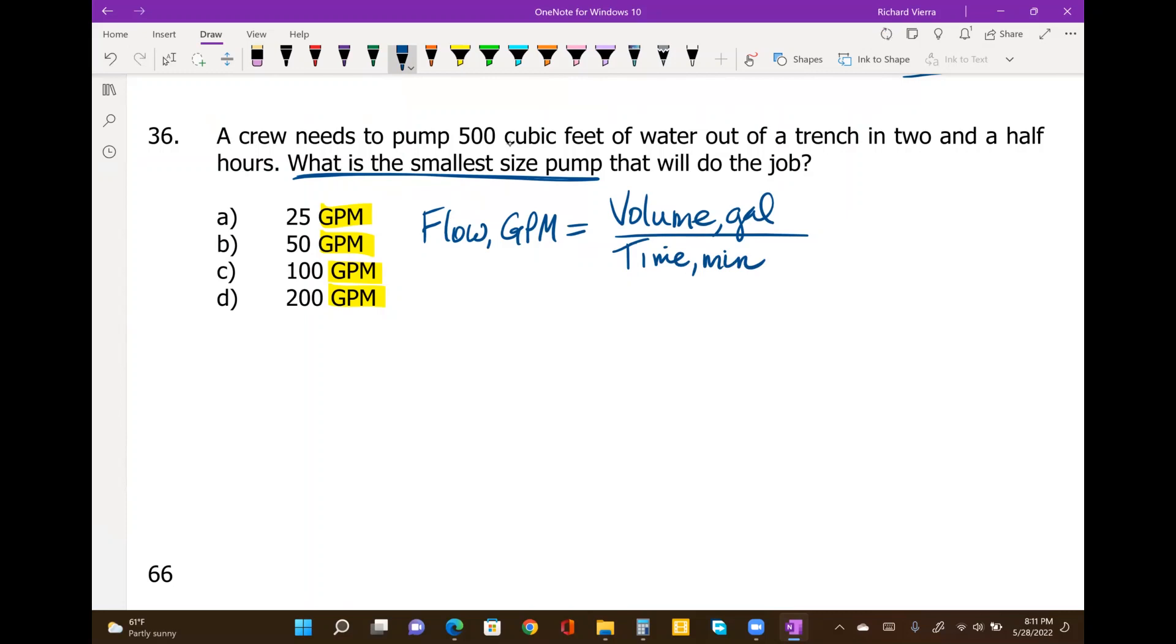So our volume, this example number 36, is given as 500 cubic feet of water, which we're going to have to convert into gallons